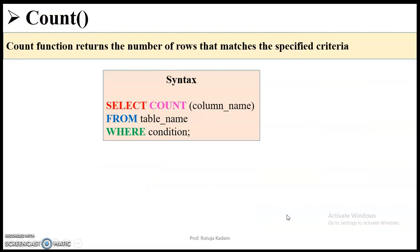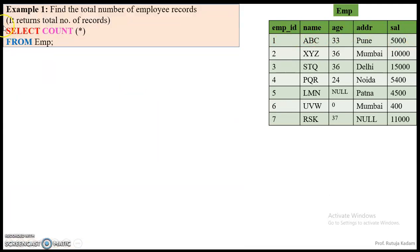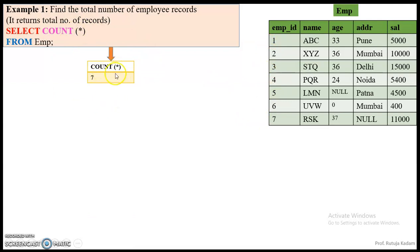Now let us see how we apply these aggregate functions in SQL. The COUNT function will return the number of rows that match the specified criteria. The syntax is: SELECT COUNT(column_name) FROM table_name WHERE condition. So let us consider the table named employee with five attributes: employee ID, name, age, address, and salary. The first example is to find the total number of employee records. The query is SELECT COUNT(*) FROM employee, which will return seven — COUNT(*) means all records, and there are seven total records.